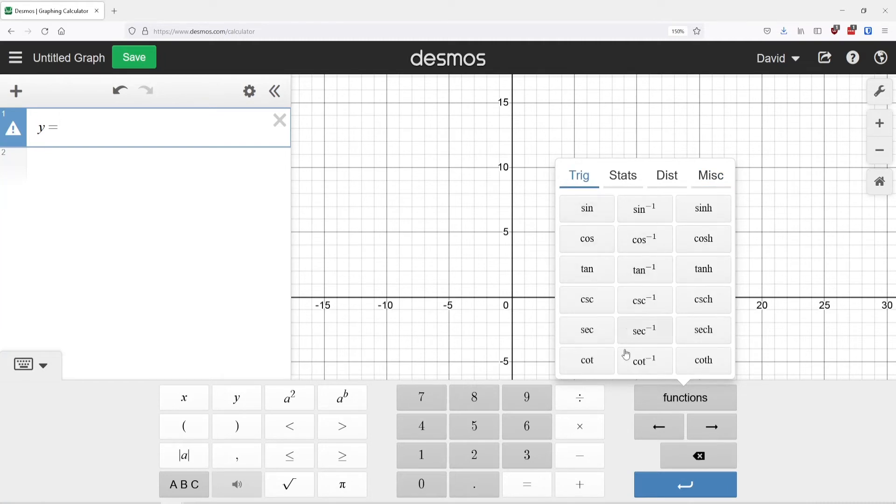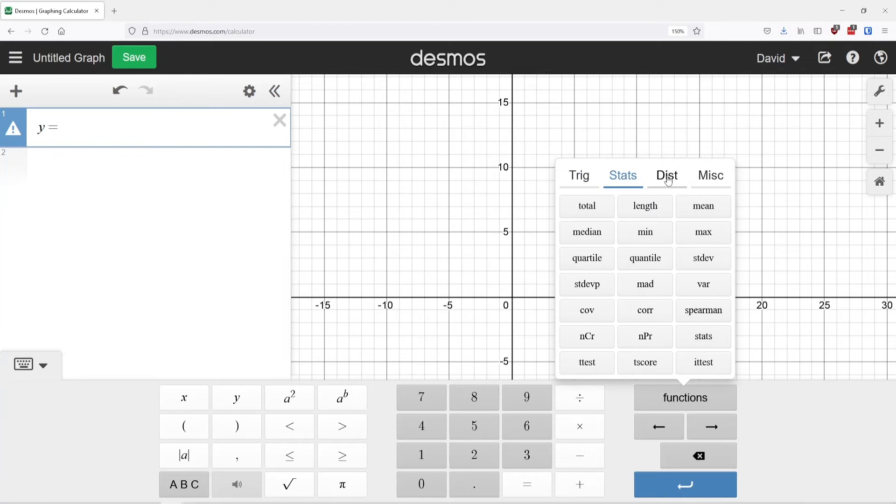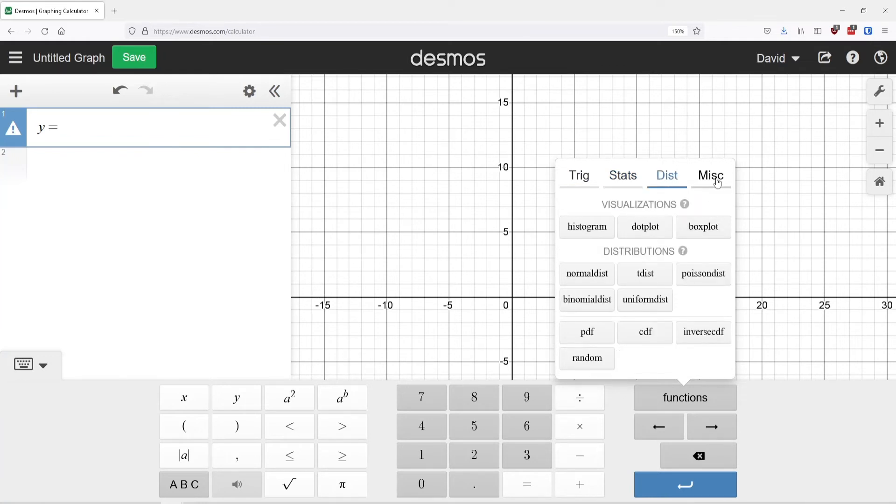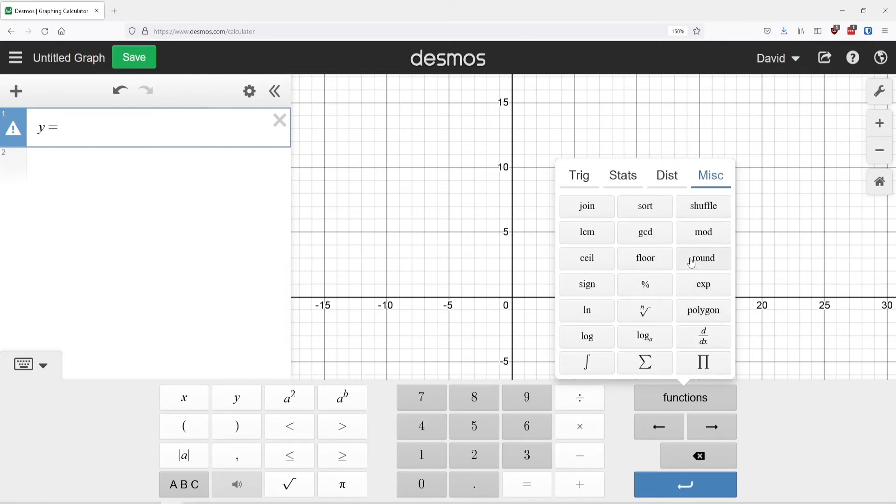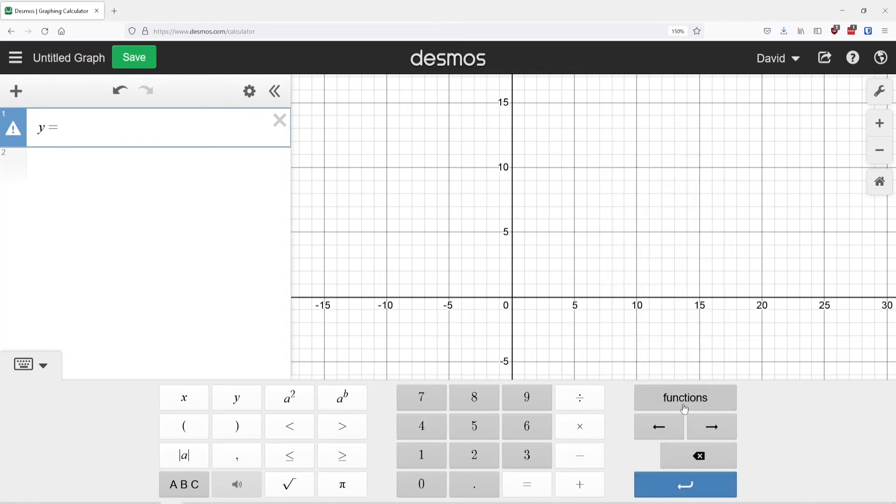You can see there are trig functions, stats functions, distributions, and others like modulus that you might want to use. You can do rounding, ceiling and floor functions, log and natural log, and higher order roots. For example, if you want to do the fourth root equation, you can type that in. You can find all of those in the functions keypad.